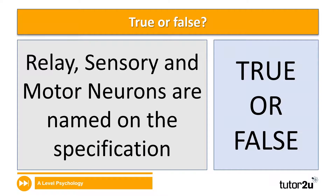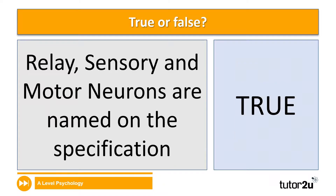The final thing we're going to have a go at is a quick true or false quiz. There's space in your worksheet for question 16 — five different statements where you decide if each is true or false. First statement: relay, sensory and motor neurons are named on the specification. That one is true, and we spoke about the potential to get a question specifically on any of those neurons.